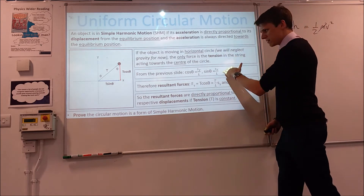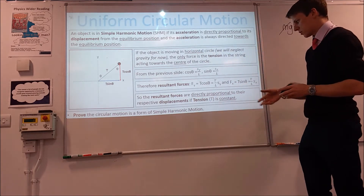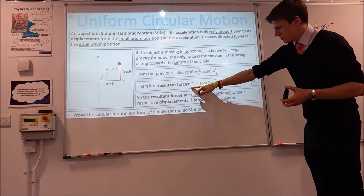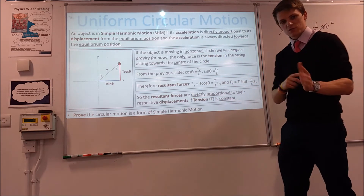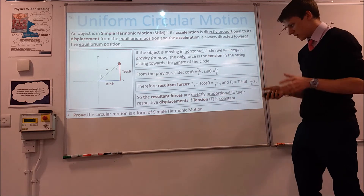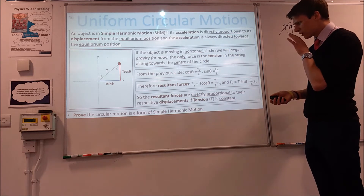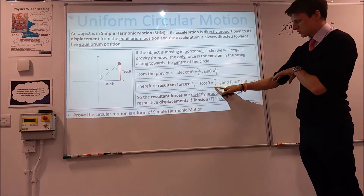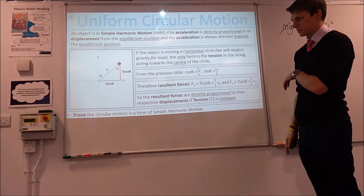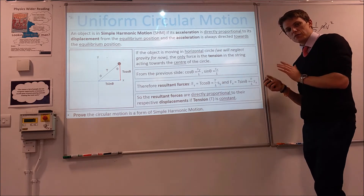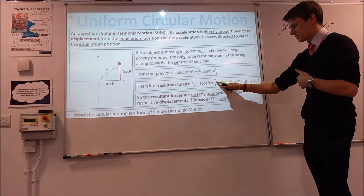The resultant force in the Y direction is T cosine theta, which is going to be T over L times the displacement in the Y direction. Likewise, the resultant force in the X direction is T sine theta, or T over L times the displacement in the X direction. We're ignoring the weight force for now. We can see that the force in both the Y and X directions are directly proportional to their respective displacements — so that's working as an example of SHM, as long as the force of tension and the distance L remain constant.